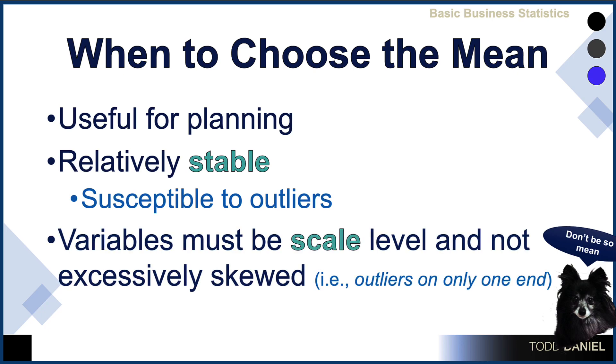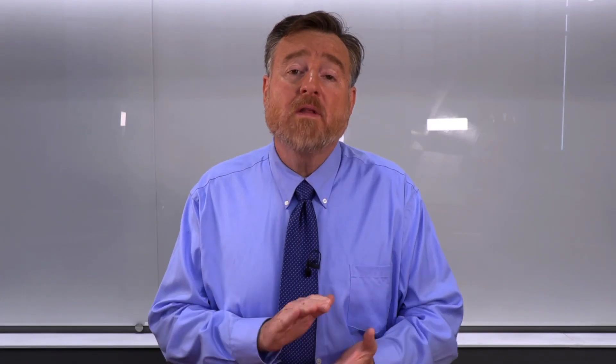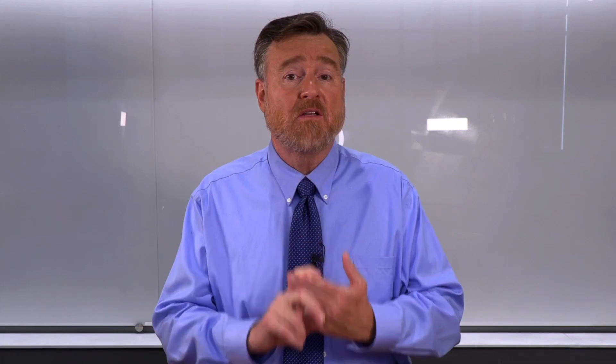But in order to use the mean, the data must be at the scale level. We can't use a mean with nominal or ordinal data. Nominal data — the numbers don't mean anything; they can't be added or subtracted. There's no math that we can do with jersey numbers. Ordinal data — the difference between first, second, third, fourth place can't be meaningfully combined so that we say the average was finishing 2.5th place. So we will only use a mean with interval or ratio, also known as scale level data.